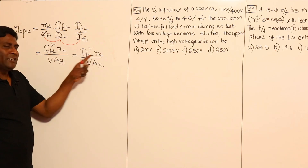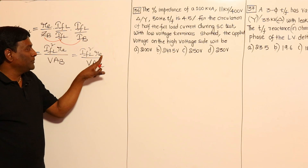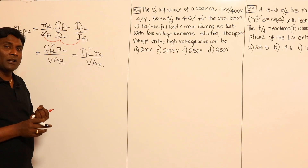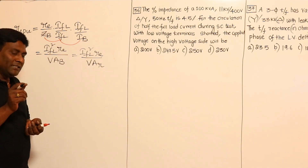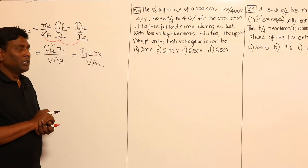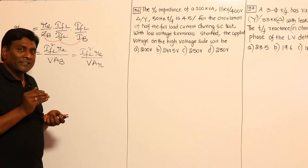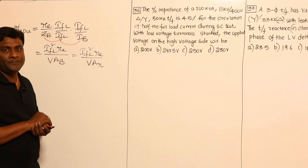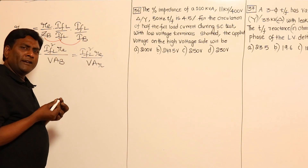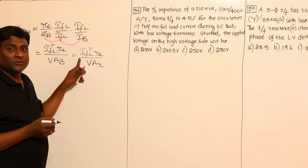Now, IFL² × Re — full load current squared multiplied by equivalent resistance — is nothing but full load copper losses in the windings. In the SC test you get copper losses. But the SC test can be conducted at less than full load conditions also, so we have to check whether the SC test is conducted at full load or not. If not, we have to map it to full load. IFL² × Re is the watt meter reading in short circuit conditions, which equals full load copper losses.